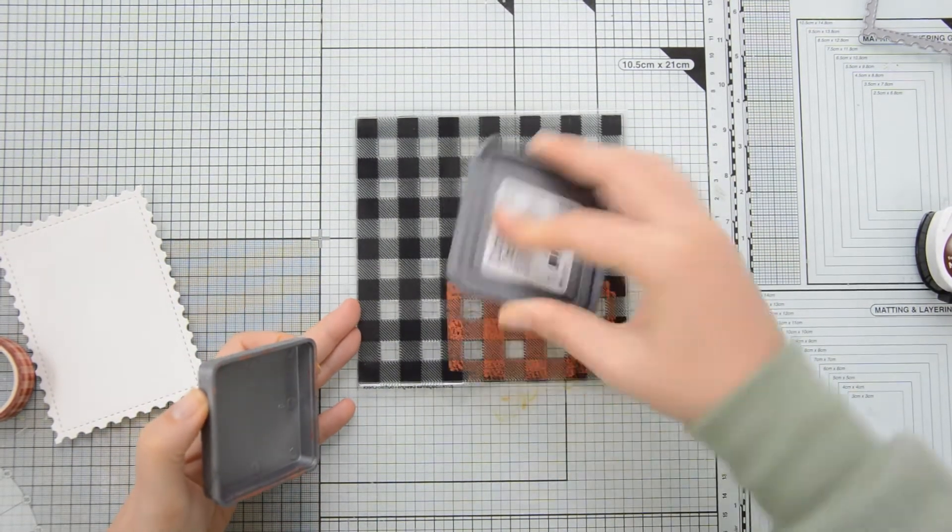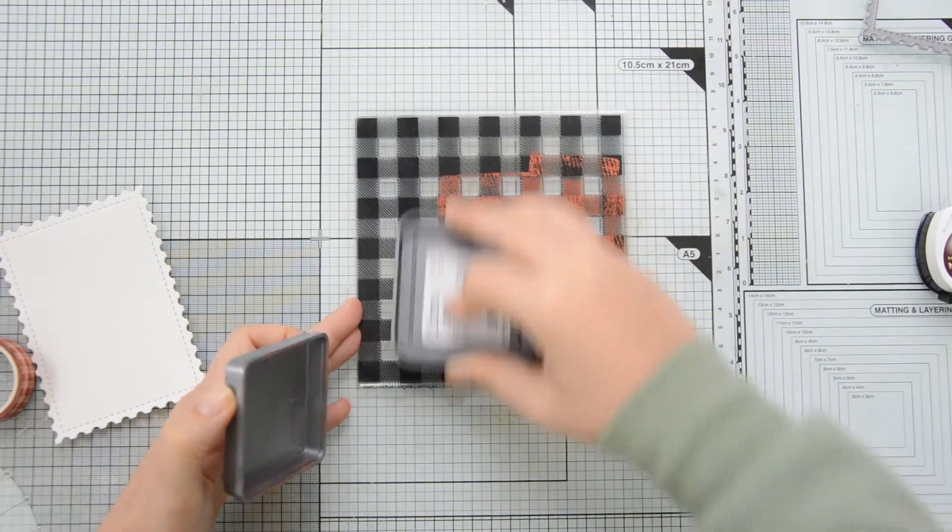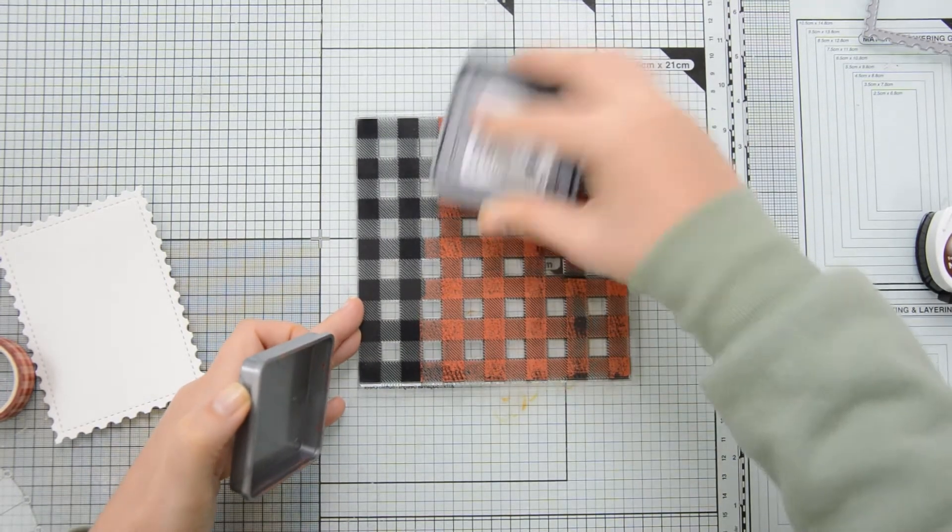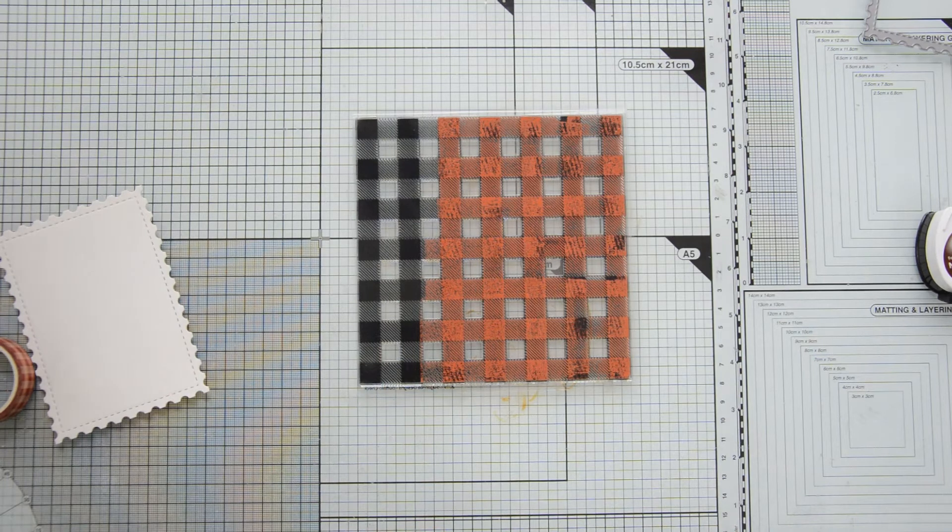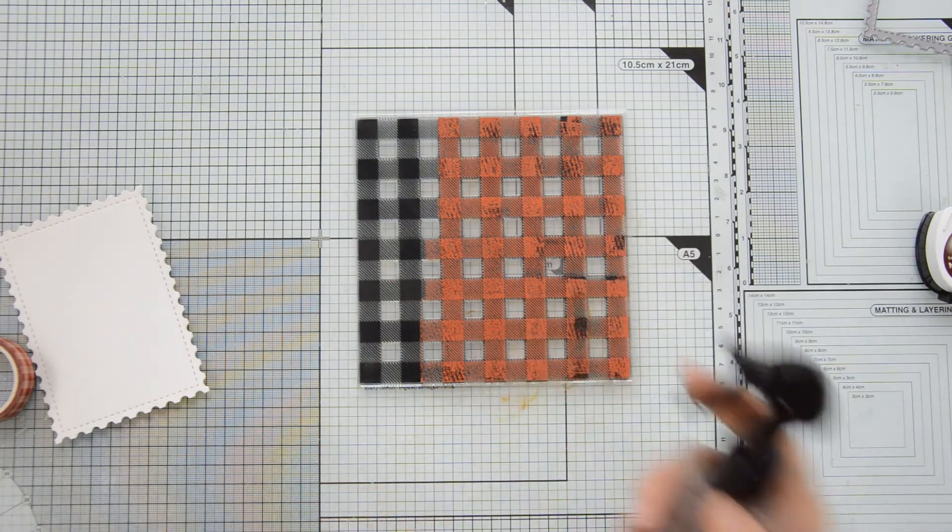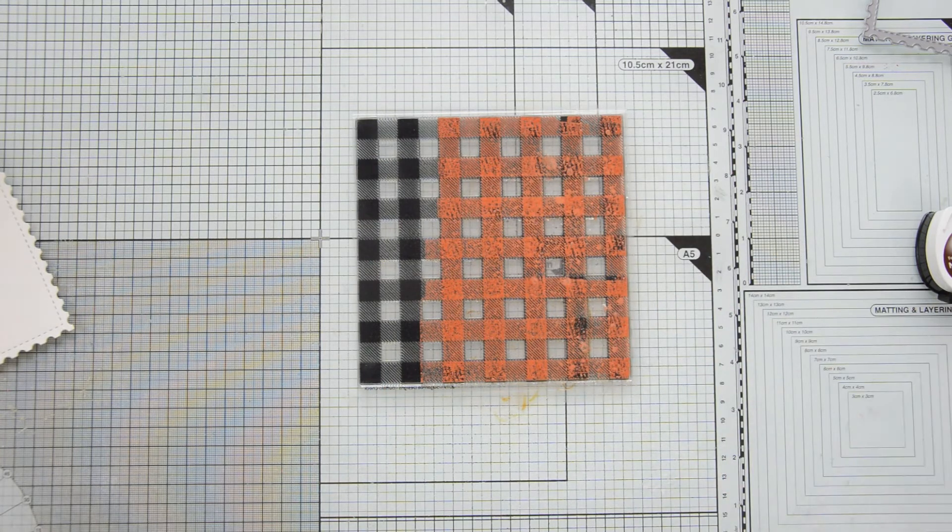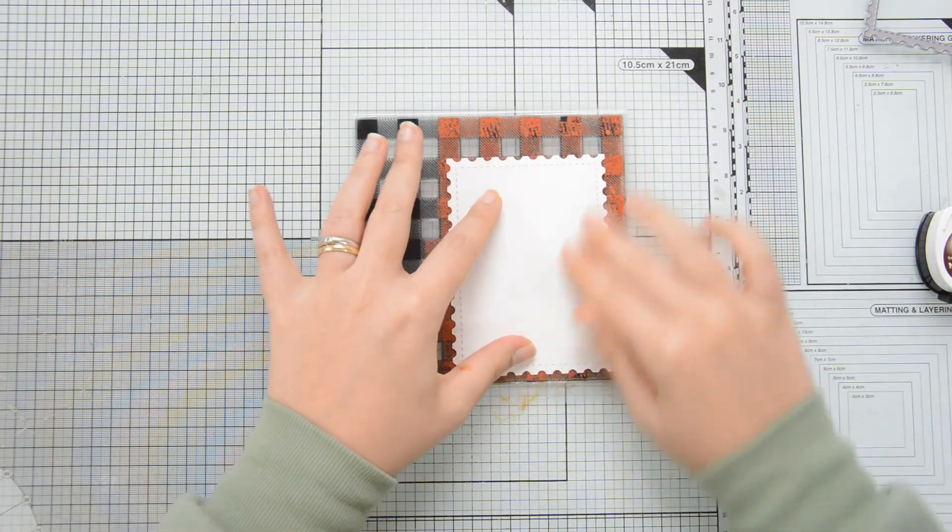Next I created another panel using the postage stamp dies and some watercolor cardstock and I'm using a fun technique with my distress oxides to create a kind of a watercolor type look. I have my buffalo check background stamp on my desk. I inked it up with distress oxide in the color fired brick and then I used a distress sprayer to lightly spray my stamp with some water.